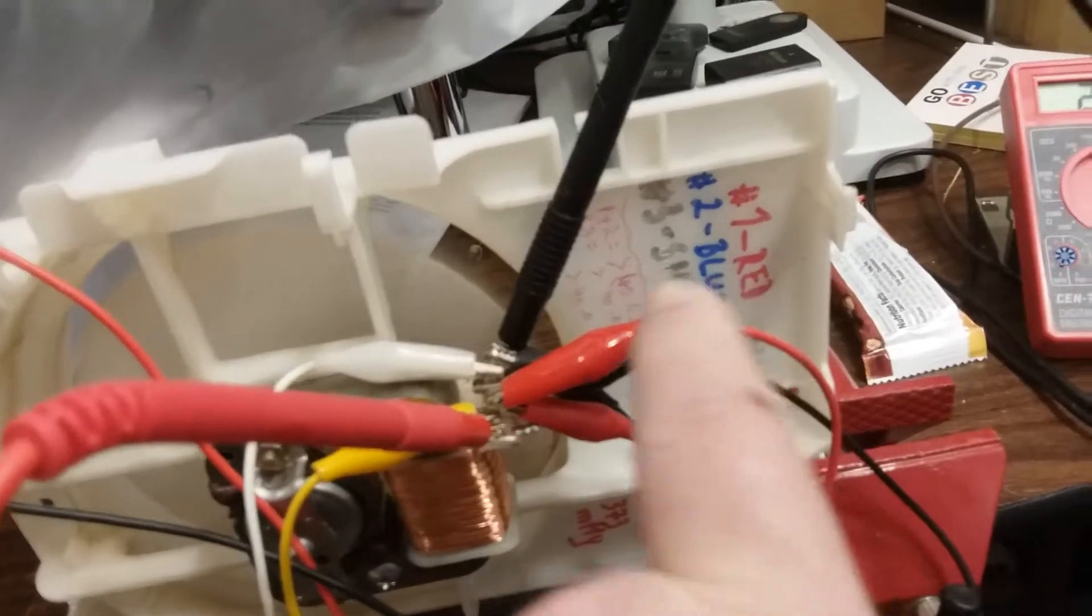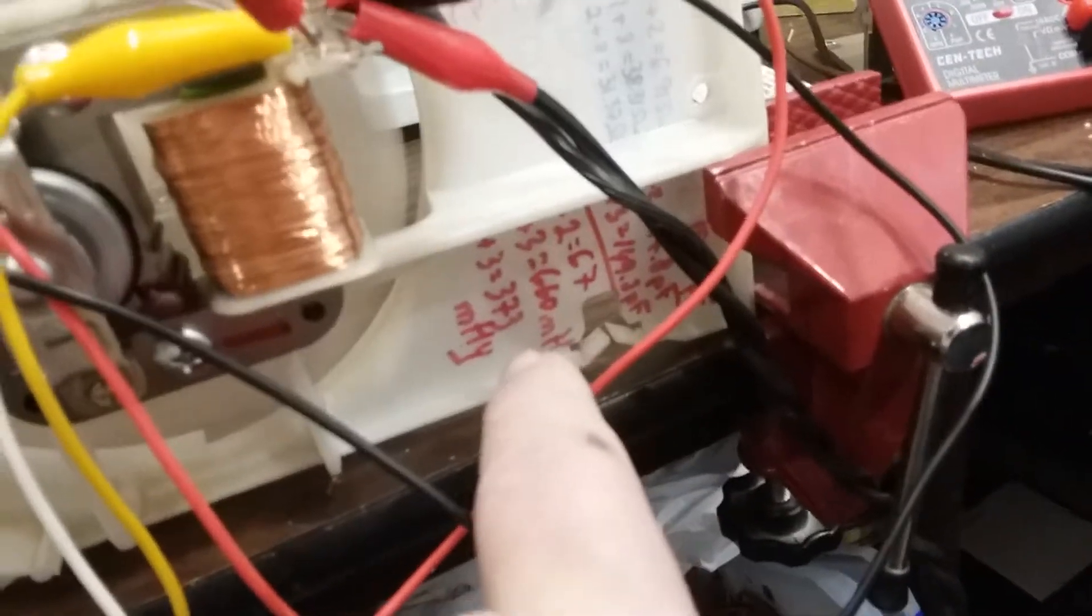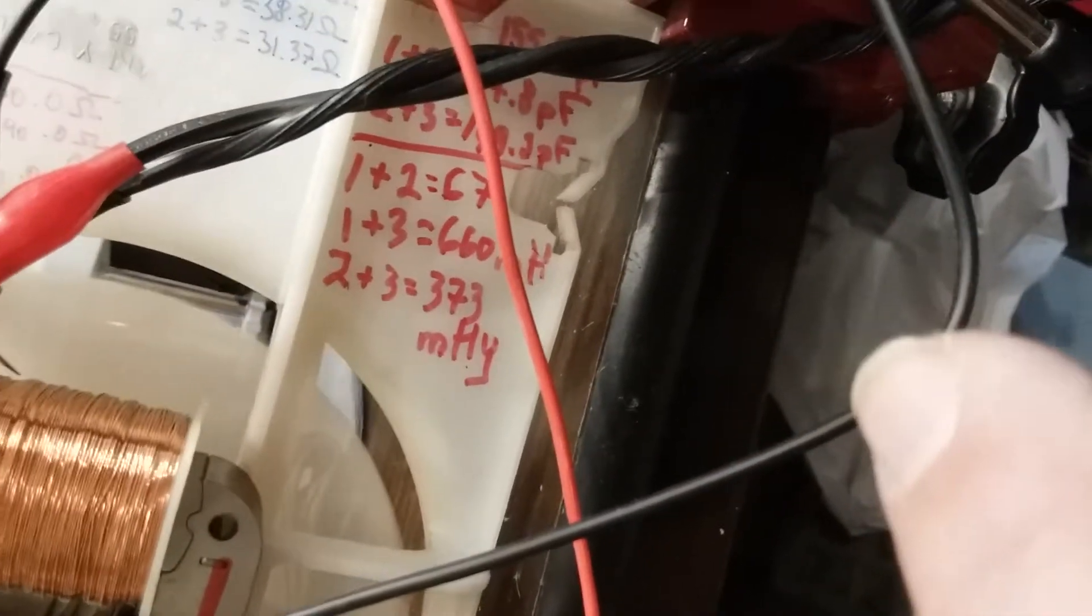Then these down here are the microhenrys. I'm going to go like this, which is going to be crazy on YouTube, but I can get to it at least so you can see that between one and two I get 67 microhenrys, one and three 660 microhenrys, and between two and three I get 373 microhenrys. Okay, so let me pause this for a second.